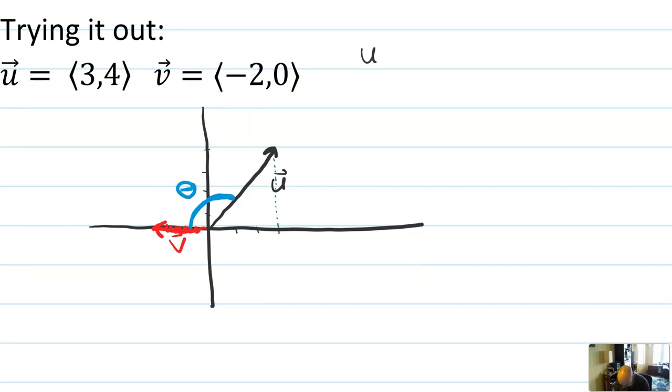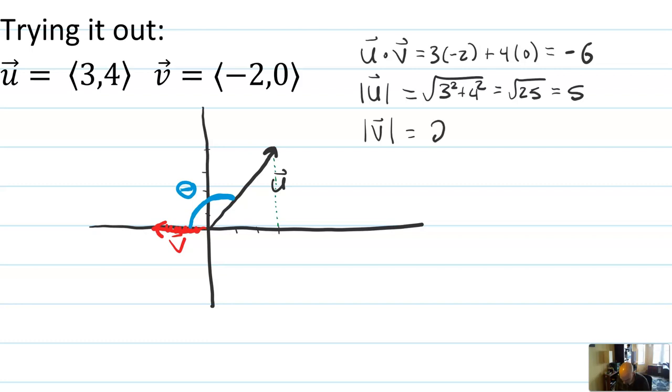So I need to compute u dot v, which is 3 times minus 2 plus 4 times 0. It's really nice that that's a 0 there because this comes out to just minus 6. I also need to know the magnitude of vector u, which I can find by doing the square root of its components squared. I know that that's going to be 25, so this is 5. And I need to know the magnitude of vector v. I can do the square root of the components squared, or I can just look at the vector and notice that it's horizontal. So the magnitude of vector v is just going to be positive 2.